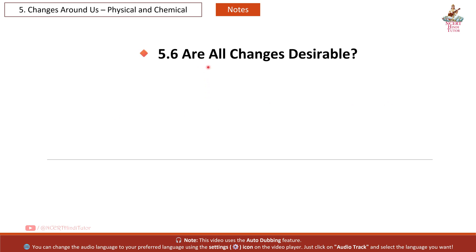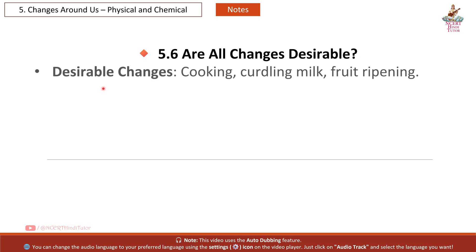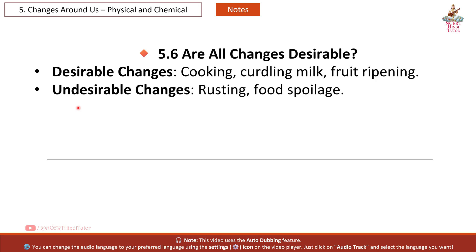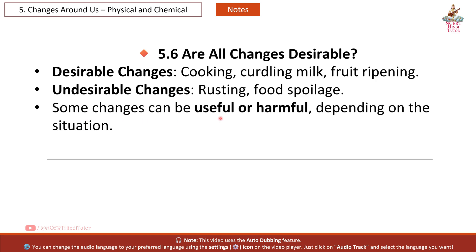Section 5.6: Are all changes desirable? Desirable changes: cooking, curdling milk, fruit ripening. Undesirable changes: rusting, food spoilage. Some changes can be useful or harmful depending on the situation.